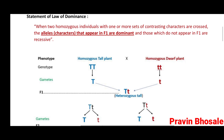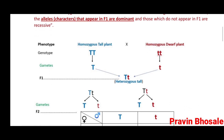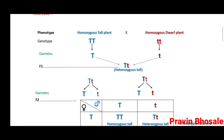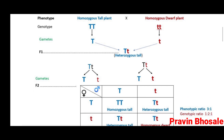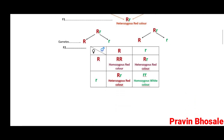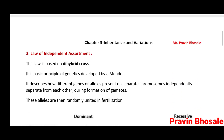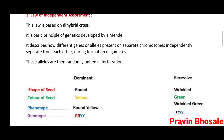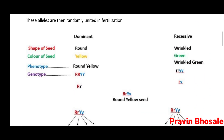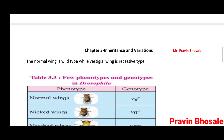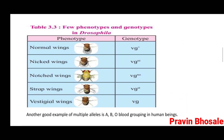Then you can see a law of dominance statement and a diagrammatic representation. Then law of independent assortment — normally it comes for four marks.